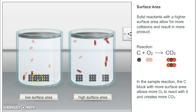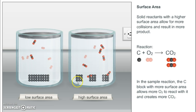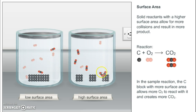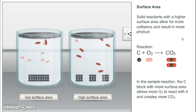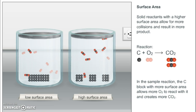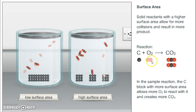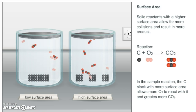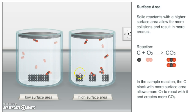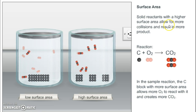Let's look at some animations. With low surface area, only the outside gets hit when it reacts. But when broken up, you have the whole outside edge plus the new internal edges, creating extra contact points for more collisions. Solid reactants with a higher surface area allow for more collisions and result in more products. For example, carbon (black molecules) plus O2 — a diatomic molecule with two atoms per molecule — bump into each other and make carbon dioxide. The carbon block with more surface area allows more O2 to react with it and creates more carbon dioxide.